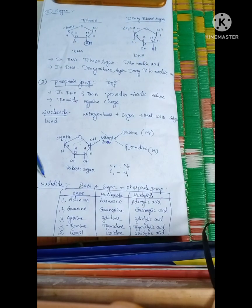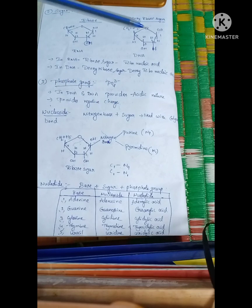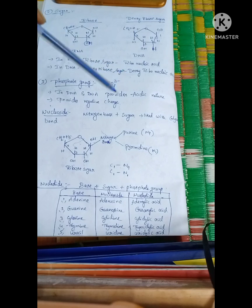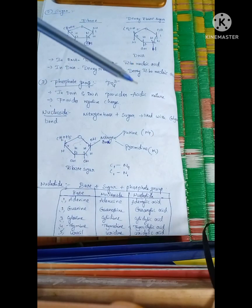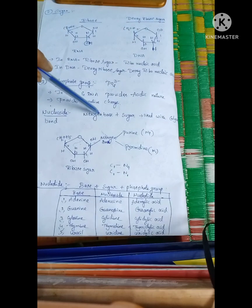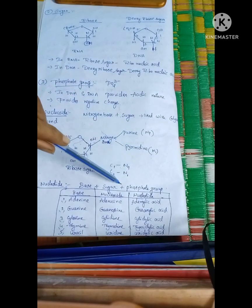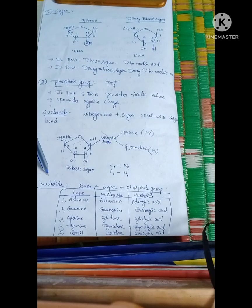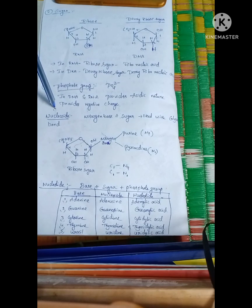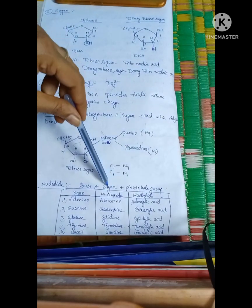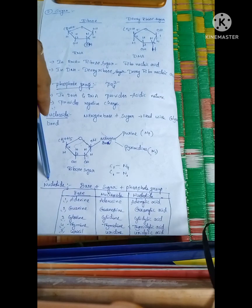The next unit is the nucleotide. A nucleotide is: nitrogen base plus sugar plus phosphate group. So, base plus sugar equals nucleoside; base plus sugar plus phosphate group equals nucleotide.